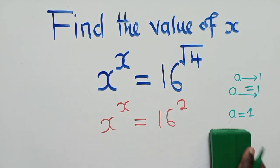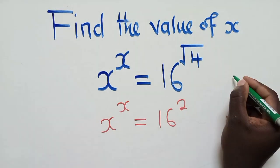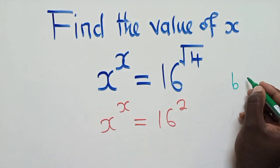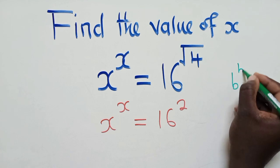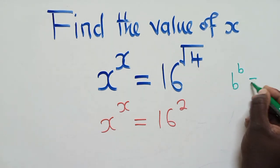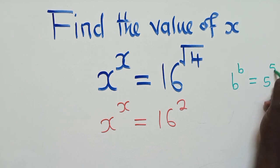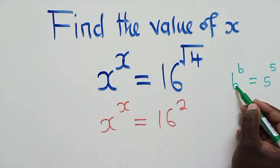So let's say we've got b, b power b equal to maybe 5 power 5. You see the laws of indices here.